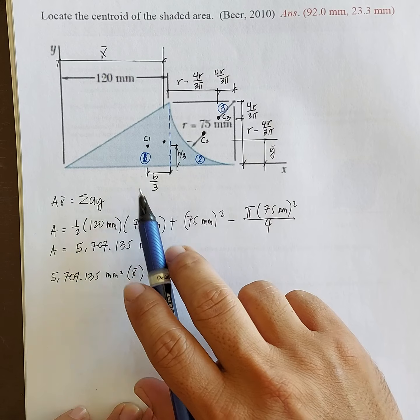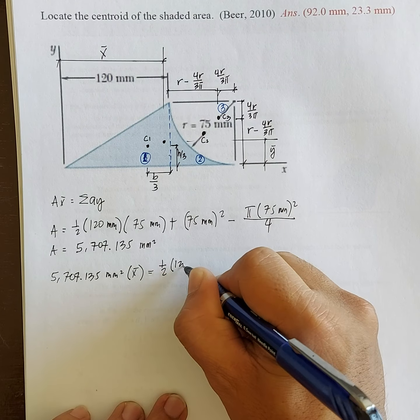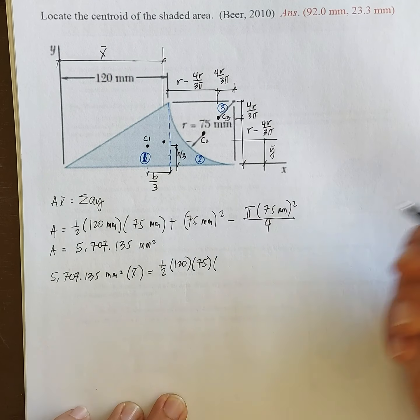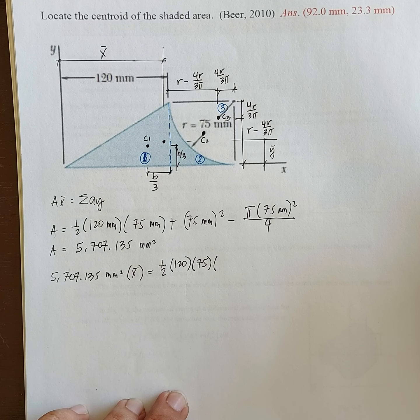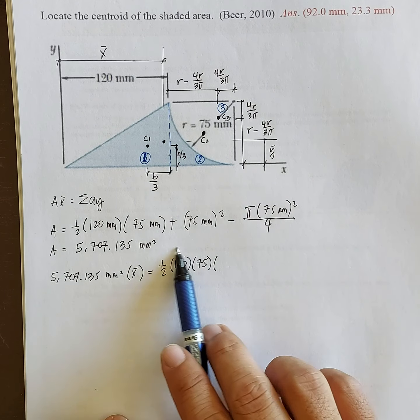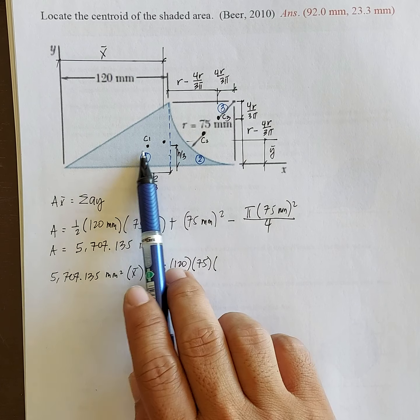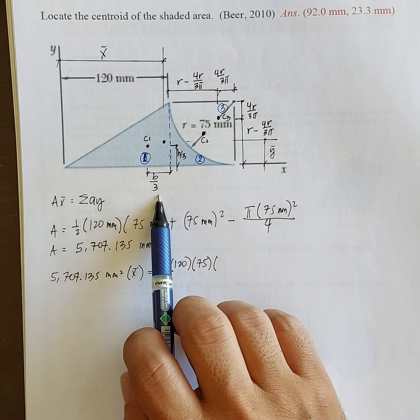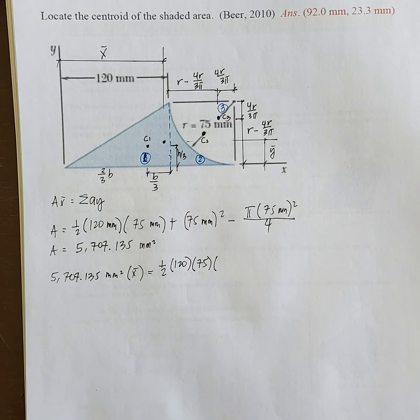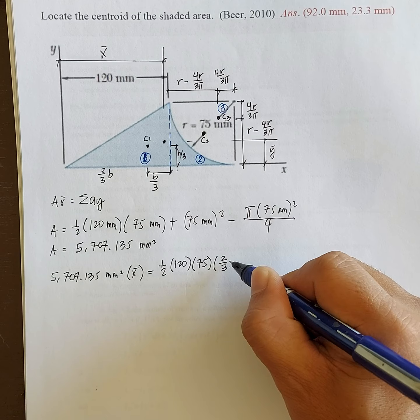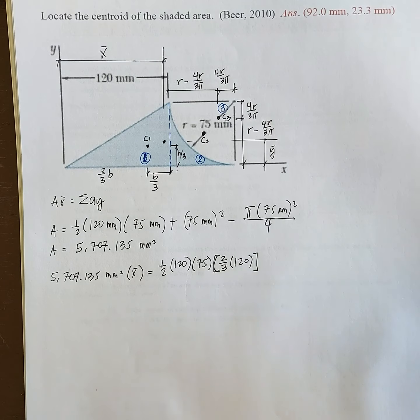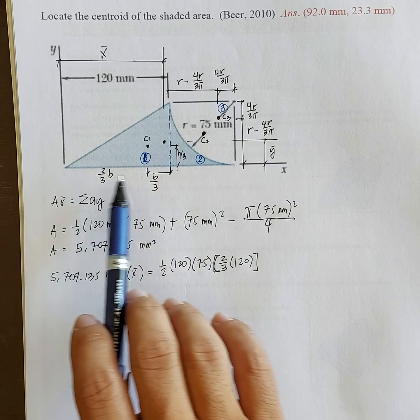So let's start with C1. Area 1 is triangle, so 1 half, 120, I won't add the units, times 75. Units in the final answer para hindi masyadong mahaba. So the moment arm. So this is the area of the triangle. So C1 to Y axis. So this is B over 3. That means this distance is 2 thirds of B. What's our B? It's 120. So that is 2 thirds of, let's use bracket, 120.